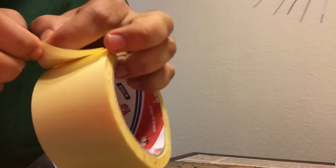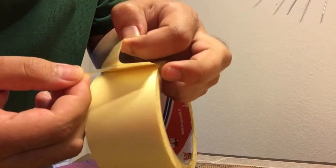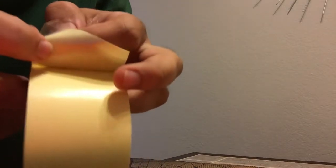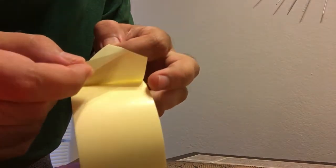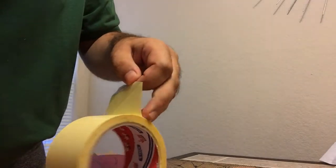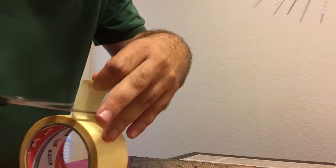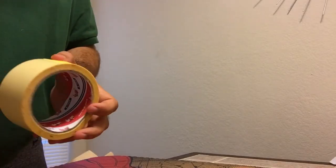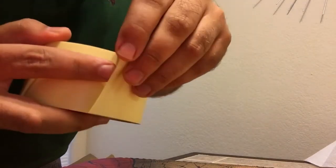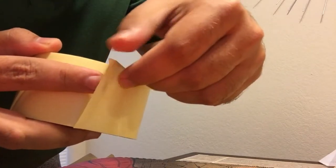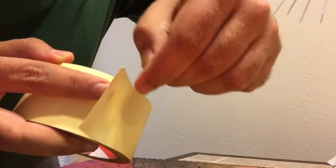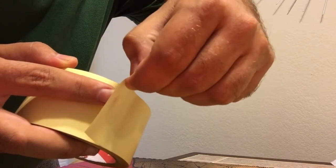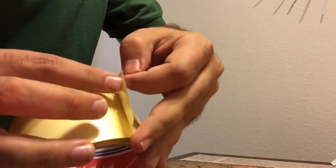What you have to do is bend it and then peel it off like this. The corner is going to be bent a little bit. Let me show you again - you have to take the corner, fold it, and then pull it.